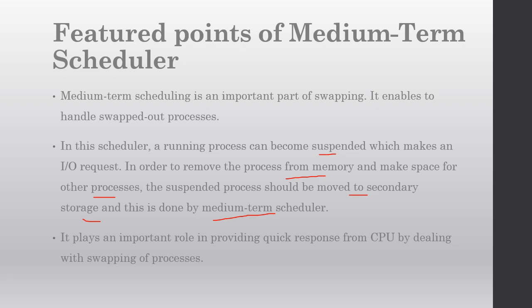So, basically, here we saw what a scheduler is. Then we saw what functions long term schedulers perform, what functions short term schedulers perform, and what medium term schedulers do. To summarize: long term schedulers submit jobs in batches from secondary storage to memory. Short term schedulers pass processes from the ready queue to the CPU. And swept-out processes are handled by medium term schedulers. This was all on schedulers and types of schedulers.